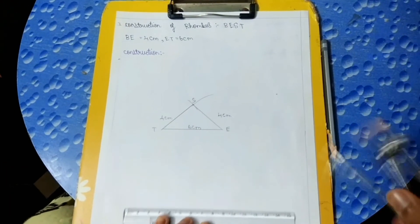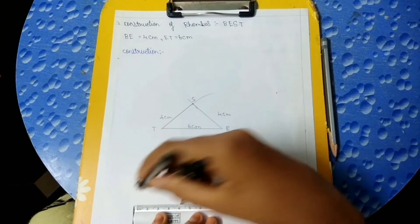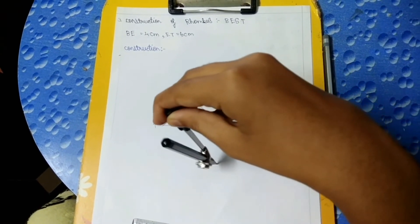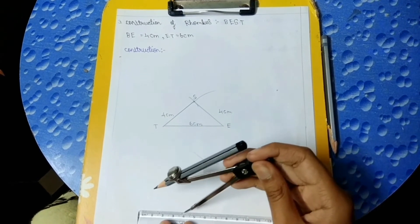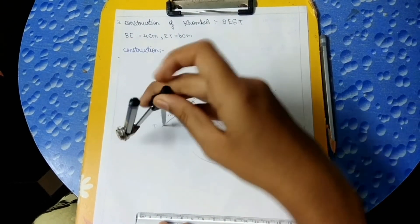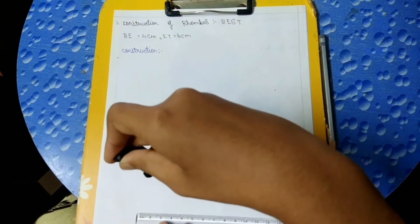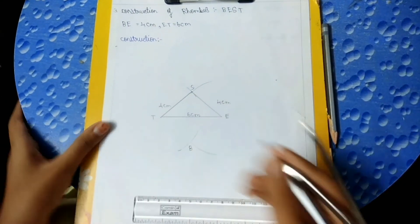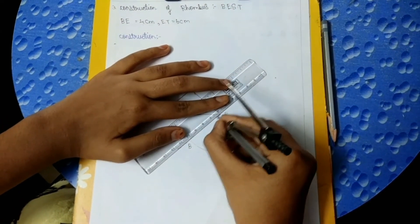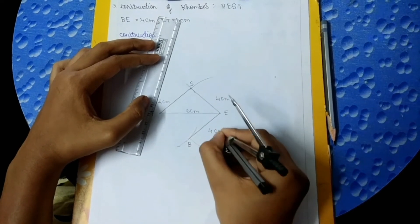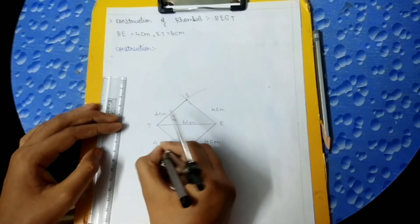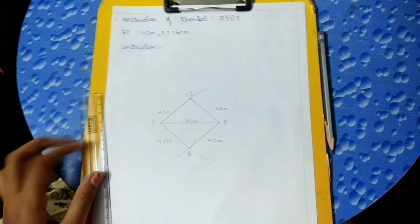Now with the help of the compass, we should take 4 cm and keep it on point E and draw an arc. Then take 4 cm again and keep the compass on point T and draw an arc. Now this point is known as B. We should draw a line from B to E of 4 cm and a line from T to B of 4 cm. Thank you for watching the construction of quadrilateral.